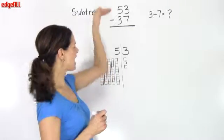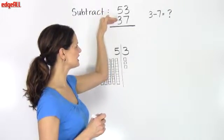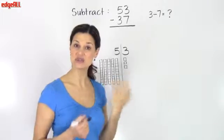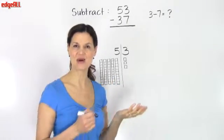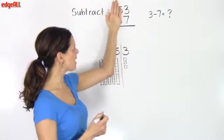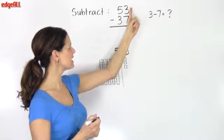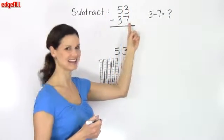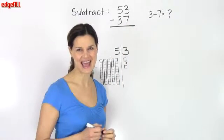So we line our two numbers up vertically and we know that we start by subtracting the digits in the ones place. I come over here and I see that in my ones column I have 3 minus 7 and I realize that I have a problem.